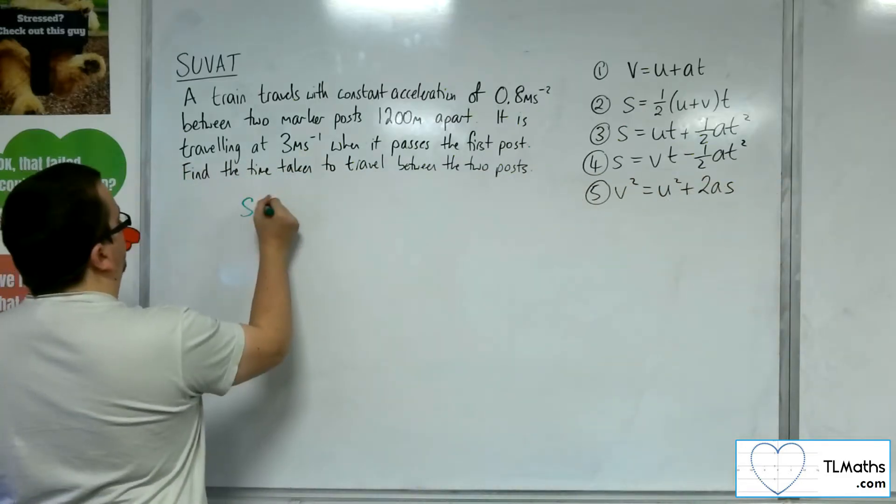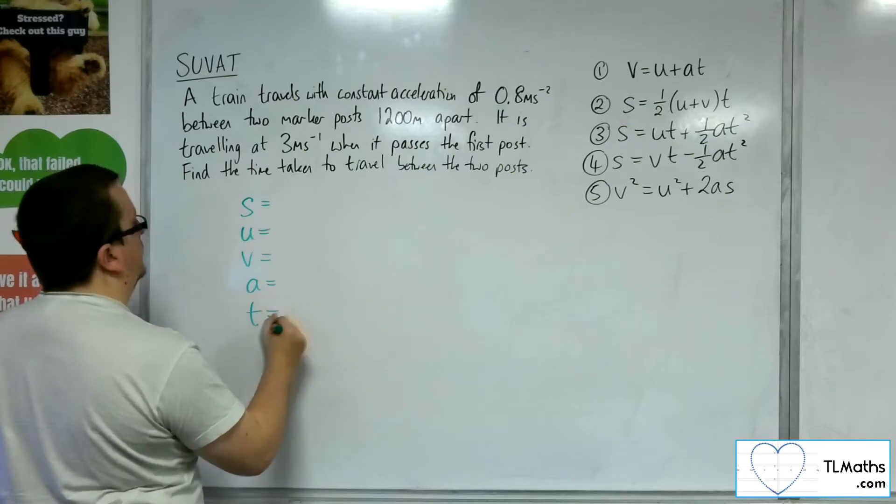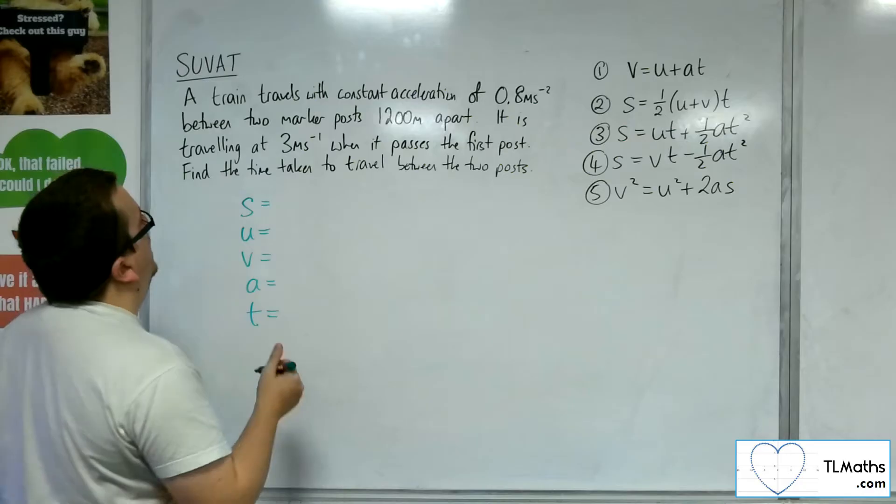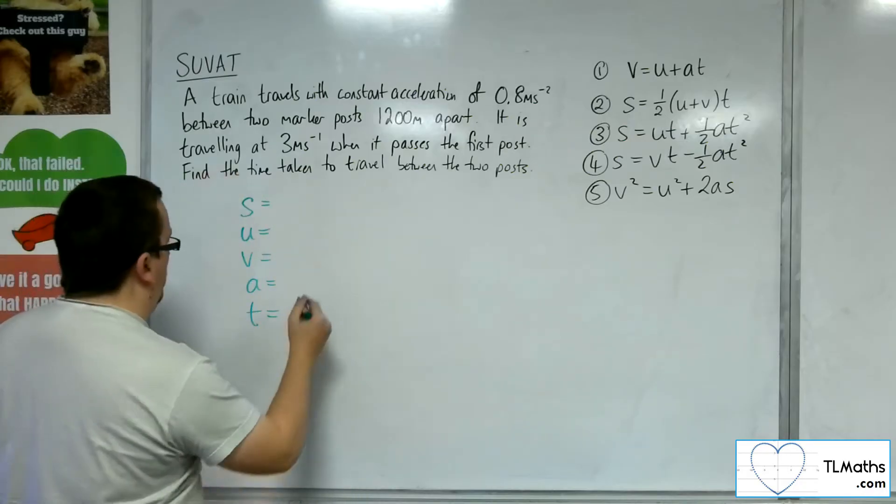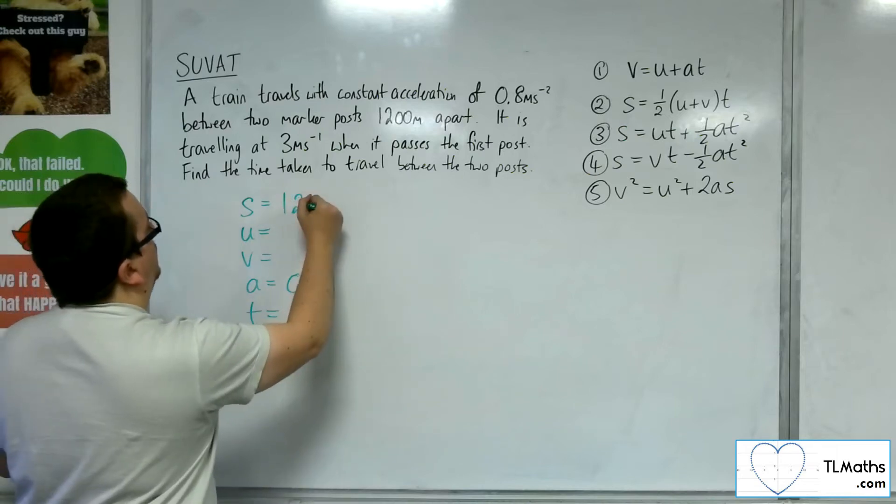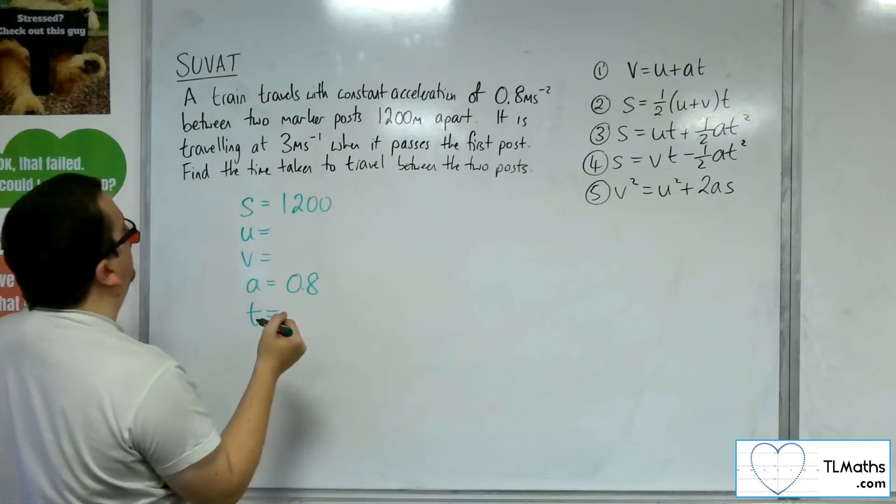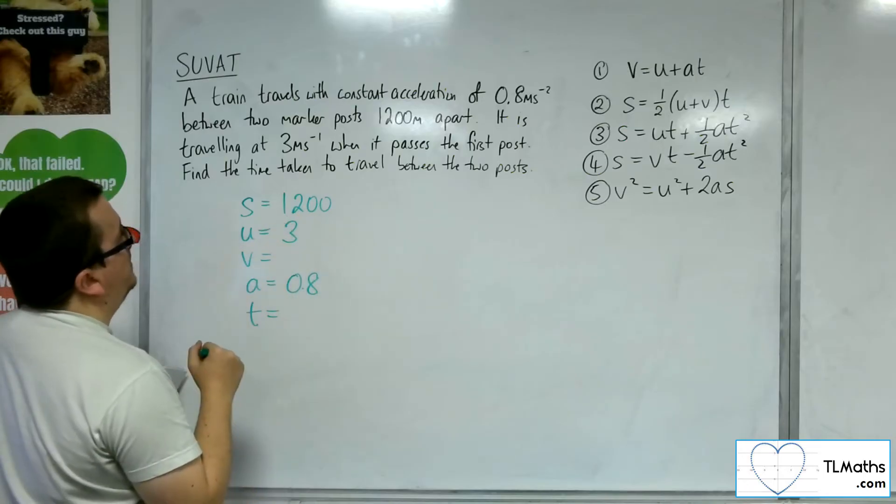So let's write down SUVAT. The train is travelling at constant acceleration of 0.8 metres per second per second. The two posts are 1,200 metres apart. It's travelling at 3 metres per second when it passes the first post.